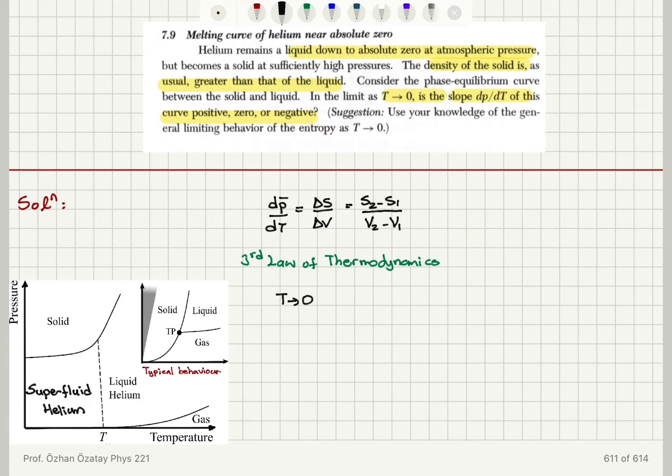because the number of accessible states will be approaching one, the entropy must go to zero, or if it's a degenerate ground state, S0, a small constant value.